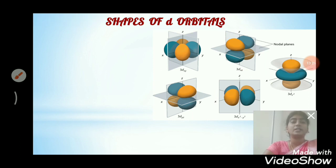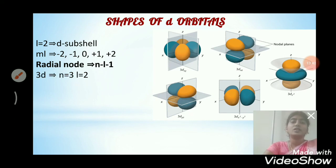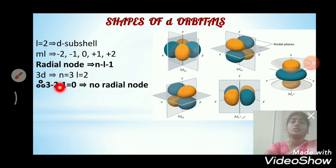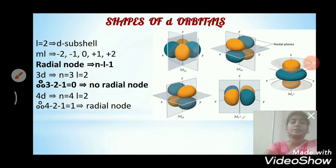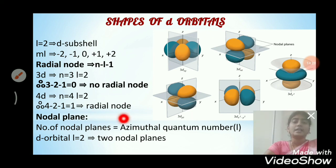The d orbital has l = 2 and ml values of −2, −1, 0, +1, +2. The radial node for a d orbital is calculated using n − l − 1. For a 3d orbital: n = 3, l = 2, so 3 − 2 − 1 = 0 radial nodes. For a 4d orbital: n = 4, l = 2, so 4 − 2 − 1 = 1 radial node. The number of nodal planes equals l, so for d orbitals, l = 2 and there are 2 nodal planes.